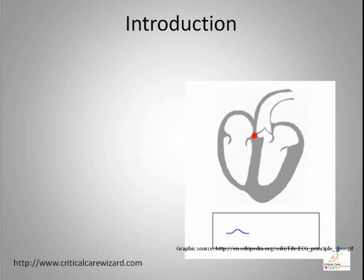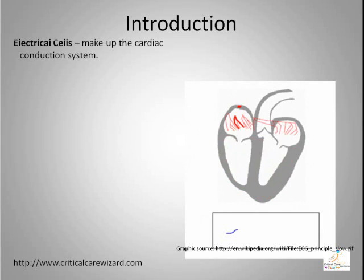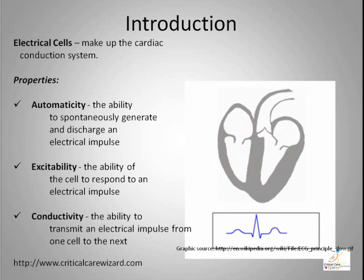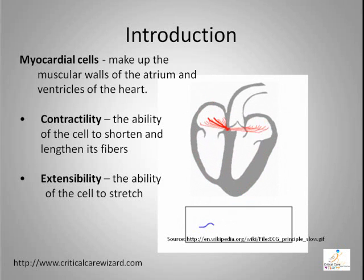Let us start with the basics of heart muscle function. The heart muscle has two types of cells that influence the electrocardiophysiological activity of the myocardium: the electrical and the myocardial cells. Electrical cells make up the cardiac conduction system and have the ability to spontaneously create, respond, and transmit an electrical impulse. The mechanical activity of the heart muscles is generally composed of the myocardial cells, which play an important role in the contraction and extension of the heart muscles.